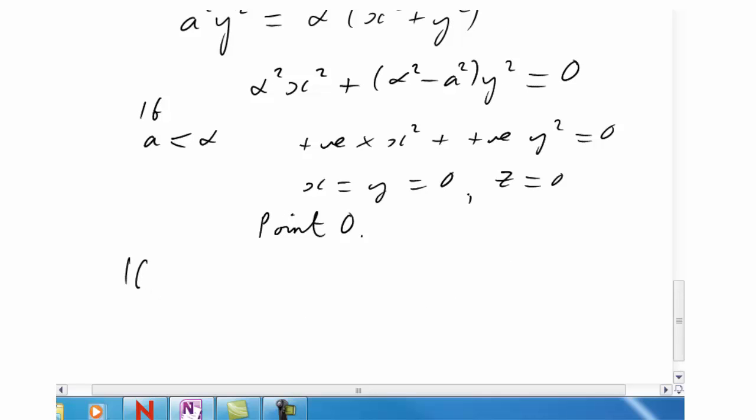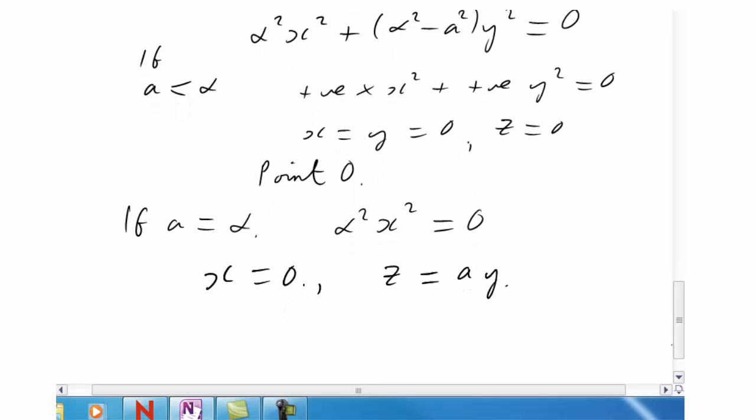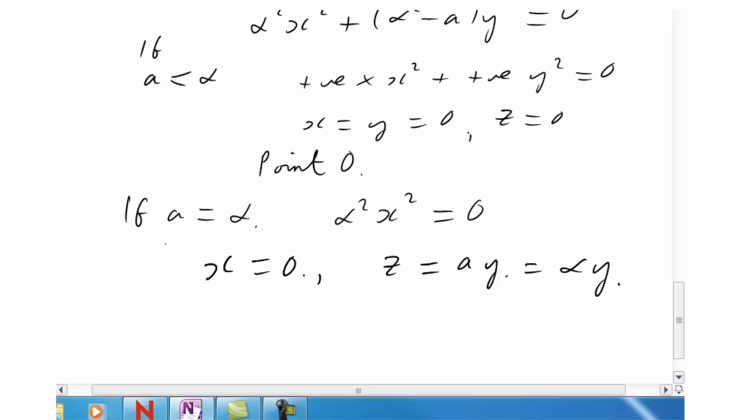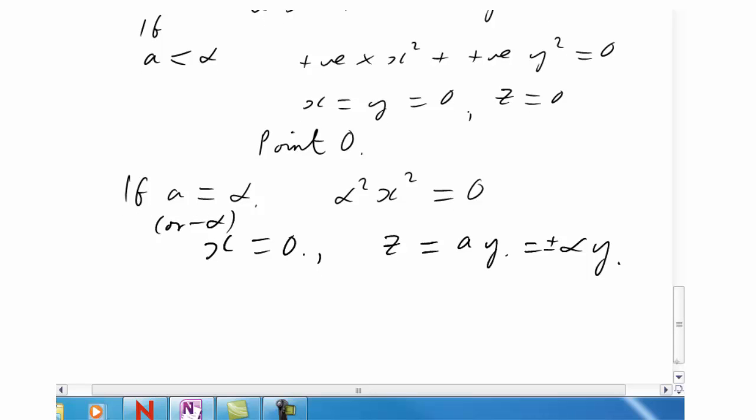That's not really very interesting. What about if a equals alpha? Now we get alpha squared x squared equals zero, and the y term disappears. That means that x must be zero, but of course we're still left with z equals ay. That is precisely a line of slope a which runs up the side of the cone, since a is equal to alpha. The same would be true if a is minus alpha. We could put plus or minus here. I think that's what you'd expect. The plane just passing through the origin, but running up the edge of the cone, just touching it. It's a tangent plane to the side of the cone. The intersection is just a straight line running up the edge.